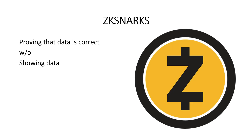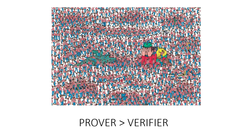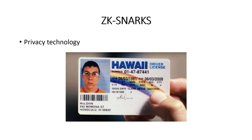So what exactly is zk-SNARKs? It's technology that allows the chain to prove data is correct without showing the data — a popular coin that uses it is Zcash. Using a Waldo example: if I'm the prover and I can find Waldo, the verifier would pay me. However, I don't want to reveal where Waldo is because I'm afraid the verifier won't pay me first — so how do I prove I know where Waldo is? That's zk-SNARKs.